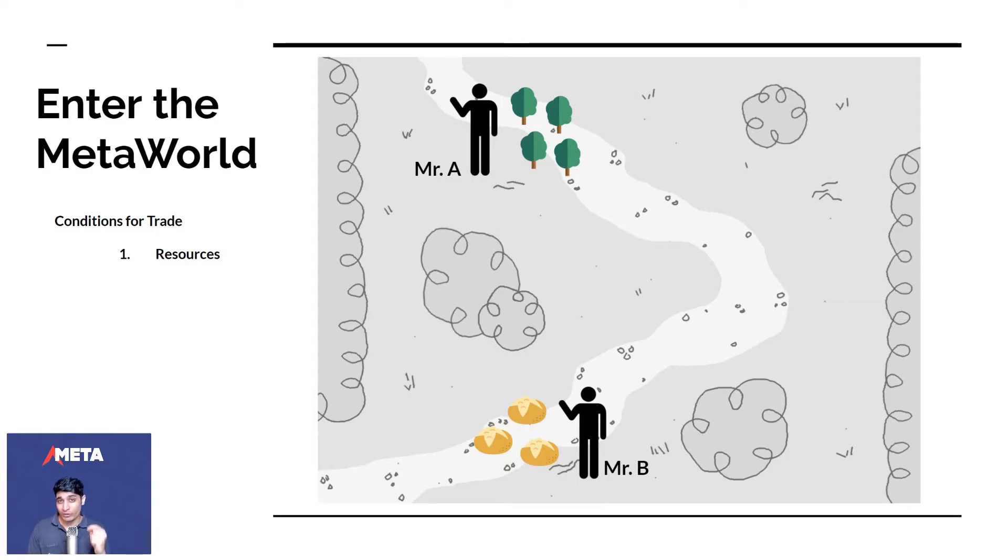So the first conditions for trade - and these people haven't traded yet, but if they were to trade - the first condition is there's got to be some resources. The next thing is you need the skill to modify these resources. Mr. A has to be able to take these trees and put it together and make a house out of it. So he needs to have some skills. Mr. B needs to be able to improve the ability for him to pull out potatoes. Maybe he might put a spade in and pull out potatoes. But here he's not going to modify it and make french fries. He's just going to sell potatoes as is.